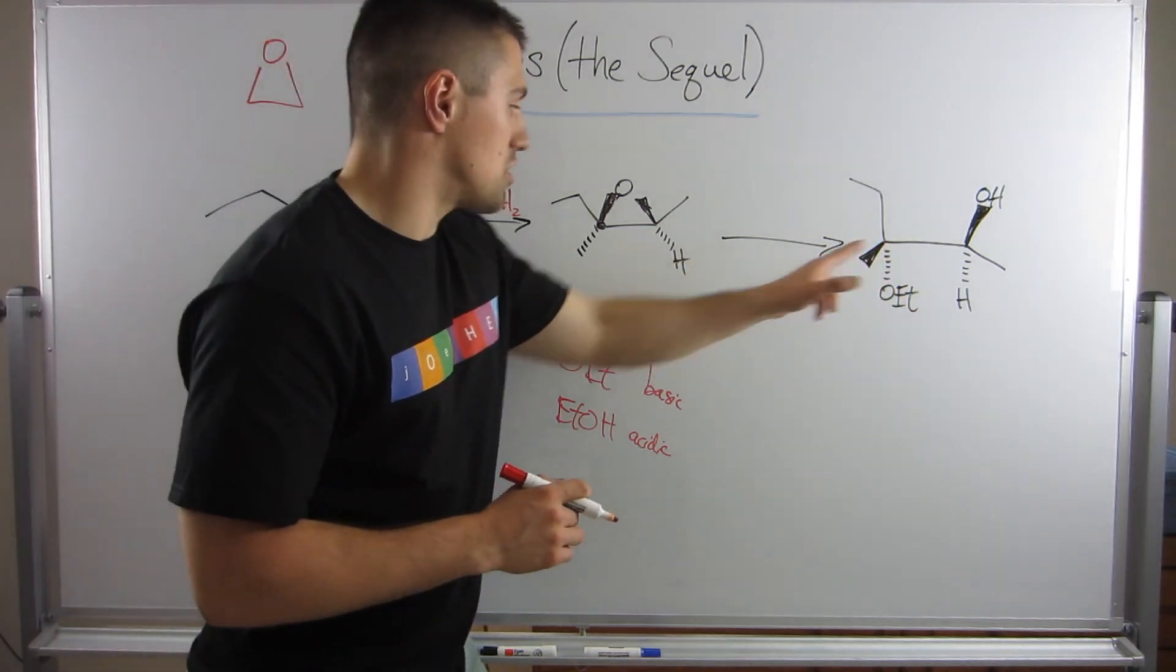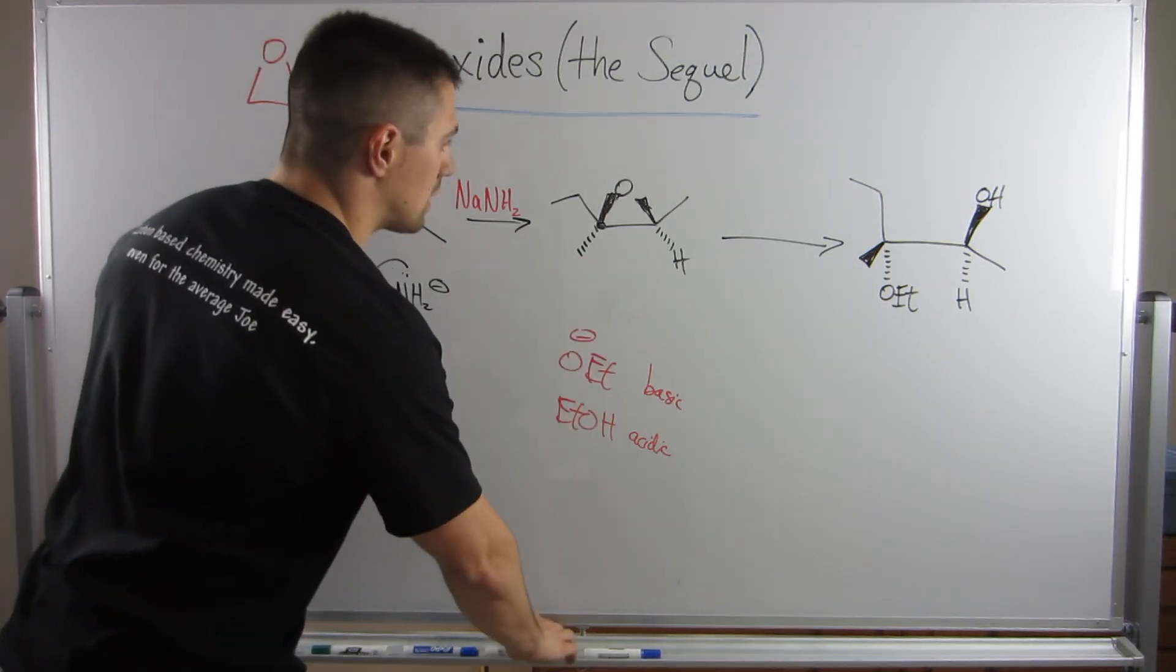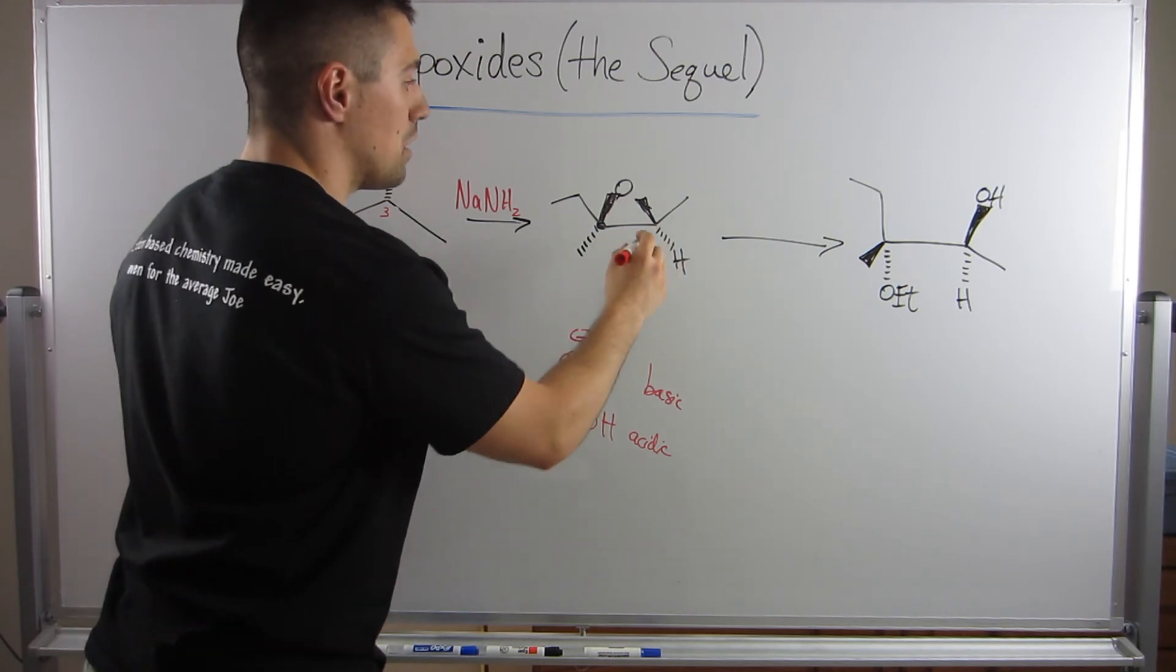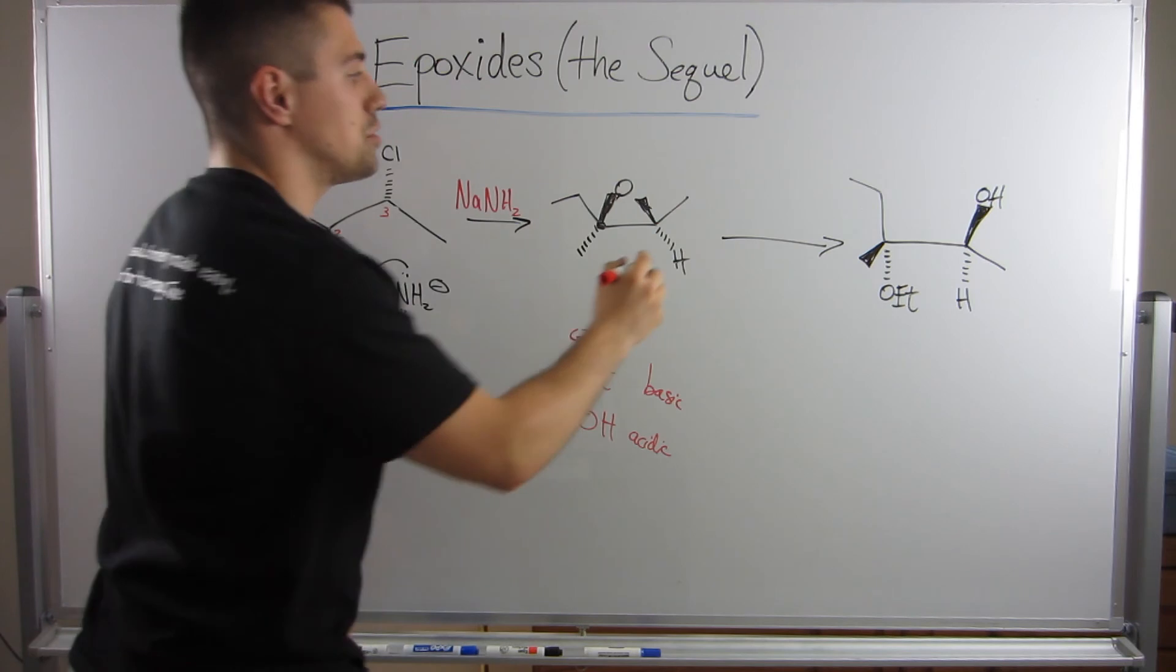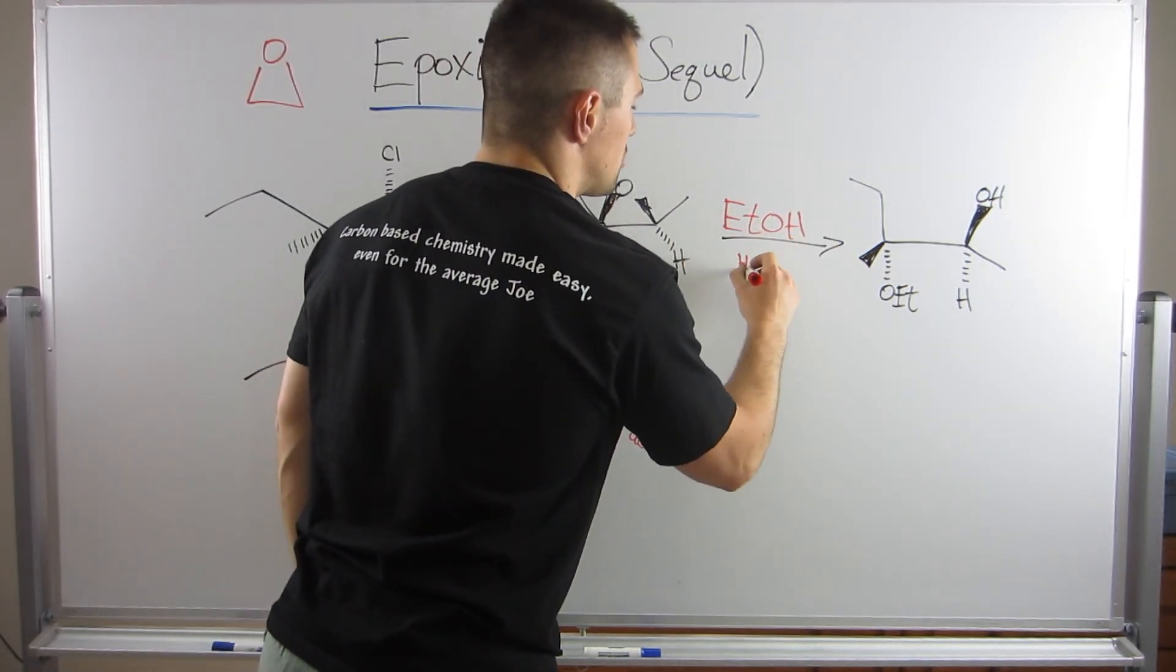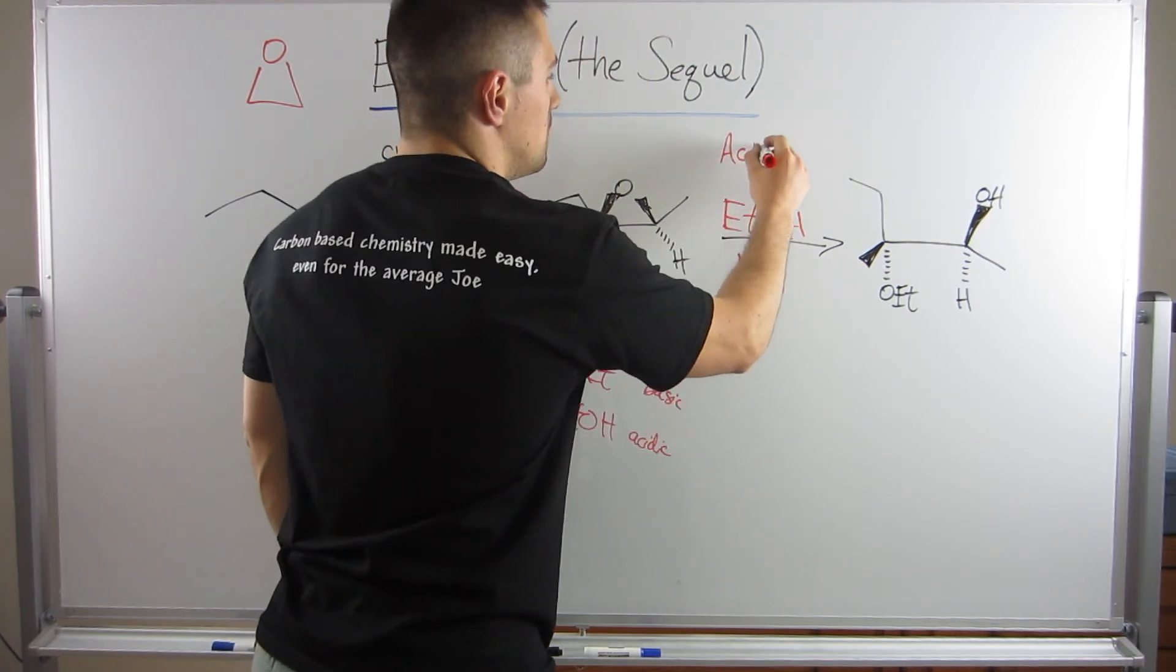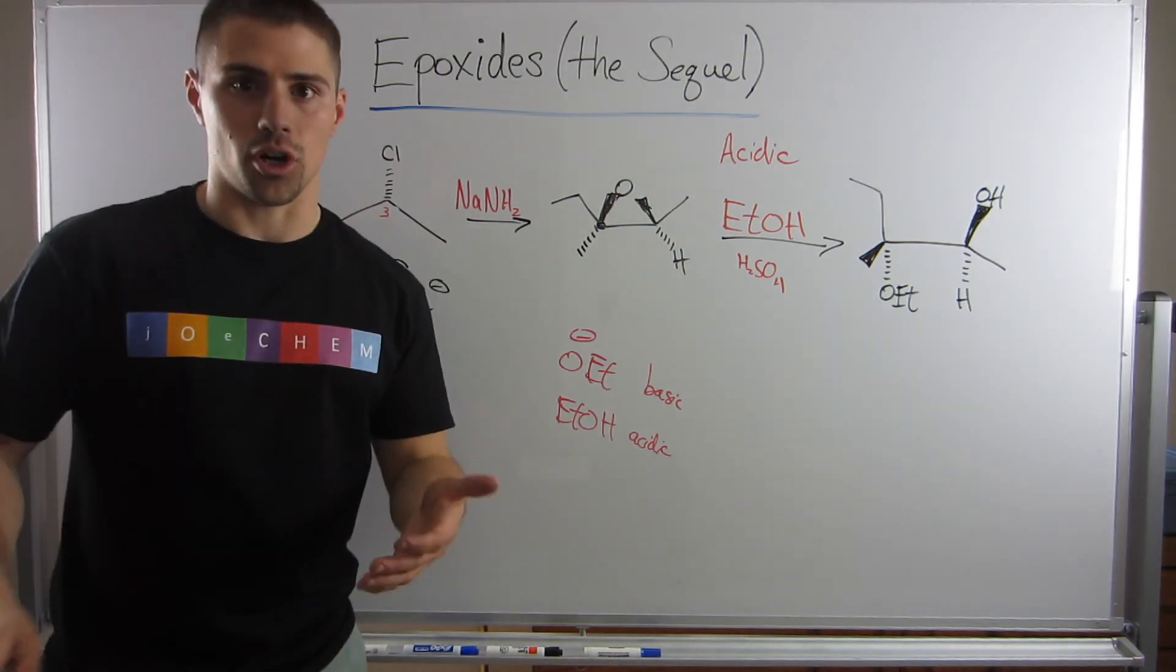And if we look at this, this carbon is one, two, three, tertiary. This carbon is secondary. Well, this is the more substituted carbon. So we need acidic conditions. So we can do ethanol if we want to be flashy, put a little H2SO4 in there. But it would be acidic conditions because the new piece we added was attached to the more substituted carbon.